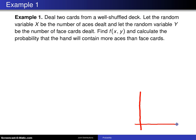Here is a graph of x and y. What are the possible values for x and y? Well x, the number of aces in the two cards, can be zero, one, or two. And y, the number of face cards, could potentially be zero, one, or two.